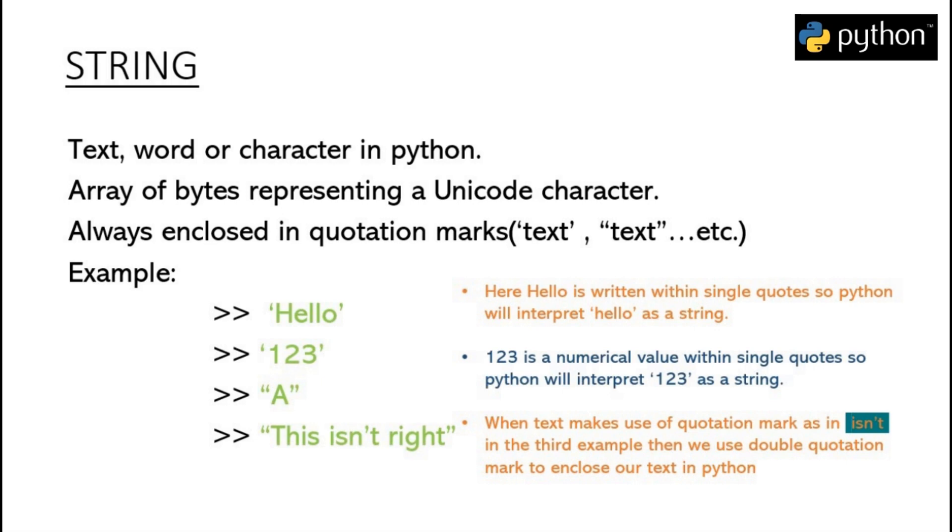Similarly, here we have an integer 123. Now 123 is an integer value, it is a numerical value, but when it is enclosed within quotation marks, then it becomes a Python string.